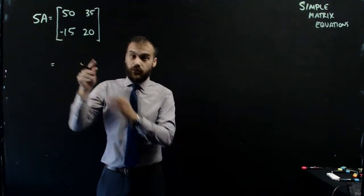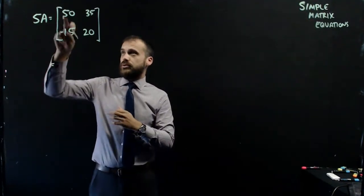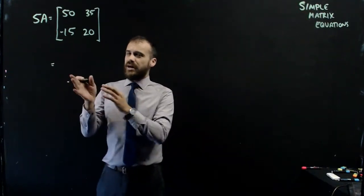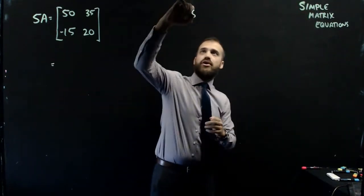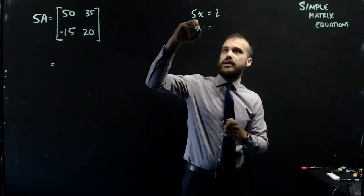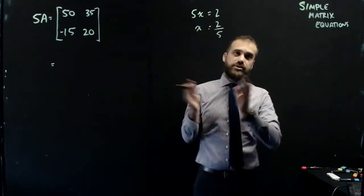This says 5 times A, which is a matrix, is equal to this matrix here. Now, we don't really have a way... So if this was like 5x equals 2, you would probably think to yourself, well, okay, divide by 5 on both sides.